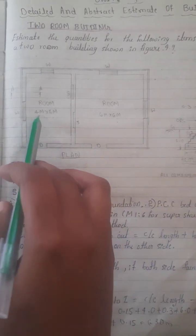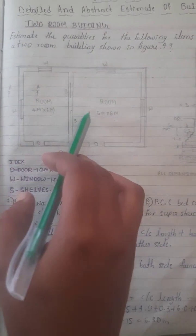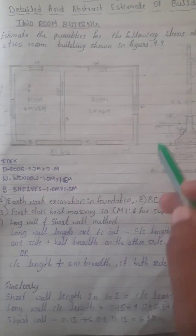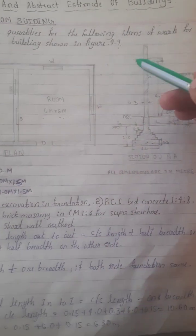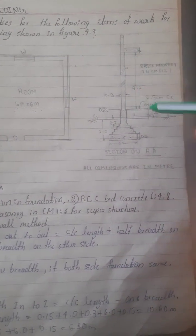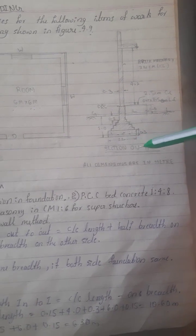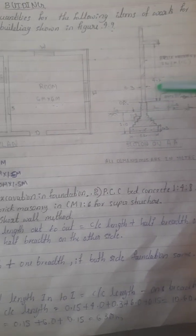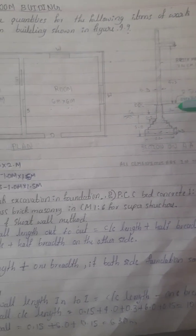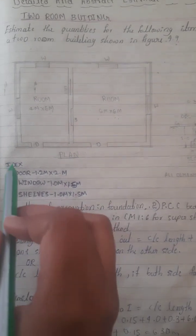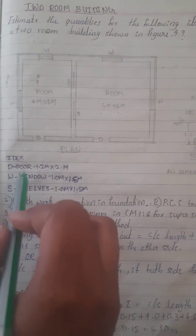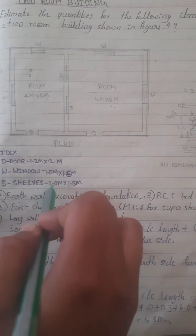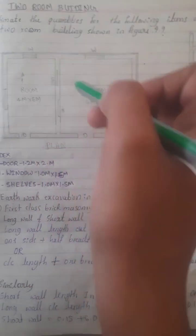The room is 4×6 meters, and the other room is 6×6 meters. The other sections are small and the dimensions are small. The door and window sizes are also small.